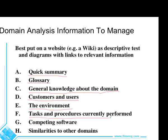The sixth topic is how people currently do things manually — what paper forms are used, for example. The seventh is what competing software is out there. We want to look at that competing software and learn from it, without violating any patents or copyrights, to understand how other software solves the problem we're dealing with. The eighth topic is similarities to other domains — for example, if we're creating an emergency management system for fire, we might look at emergency management systems for police or ambulances to learn the kinds of things that they do.